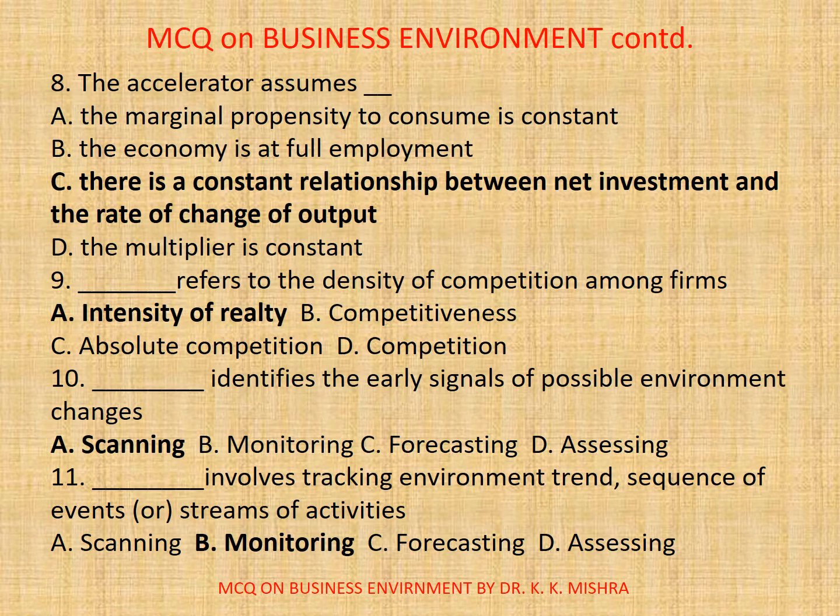Question 8: the accelerator assumes — the correct option is C, there is a constant relationship between net investment and the rate of exchange of output. Question 9: refers to the density of competition among firms — the correct option is A, intensity of rivalry.